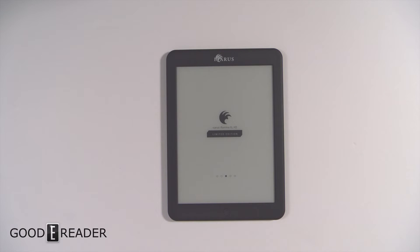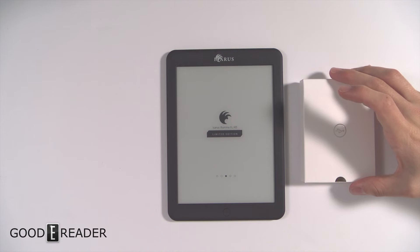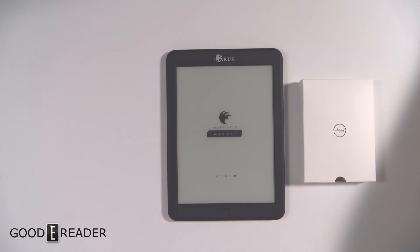This e-reader does have Google Play, so you'll be able to download apps like Audible, Audiobooks.com, and all sorts of other apps if you want to, as well as alternative e-reading apps if you don't want to use the default Icarus software.